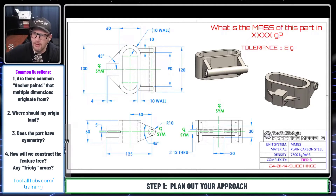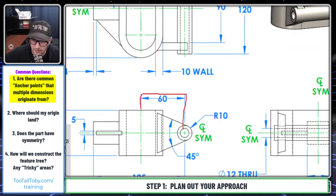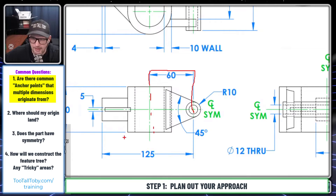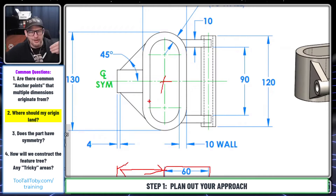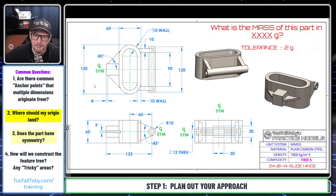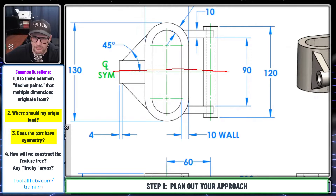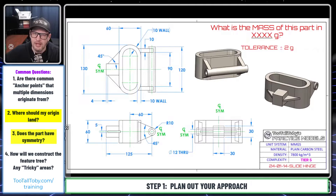Looking at this model, what we're really looking for is anchor points. This 60 dimension is coming off the center of that slotted area, and then the 125 is coming off the back of that. You could almost say that this dimension is also coming off that centered location. Because of that, it would make sense to have the origin — the center of the part — located there. The model has symmetry in this direction, so the origin is probably somewhere along this line. And those 60 and remaining 65 dimensions are going to be anchored on that point.